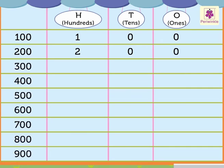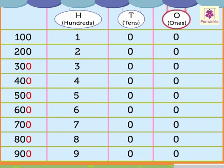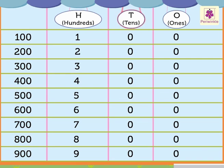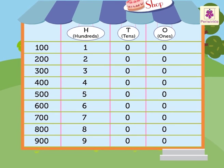Similarly, for all three-digit numbers, the hundreds digit is placed in the hundreds column, the tens digit is placed in the tens column, and the ones digit is placed in the ones column. This is how the numbers 100 to 900 are placed in the hundreds, tens, and ones columns. Wasn't it easy to understand these three-digit numbers?